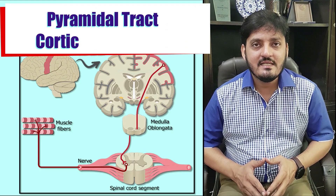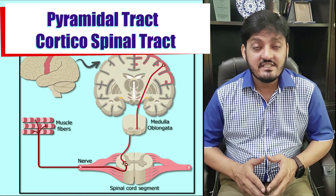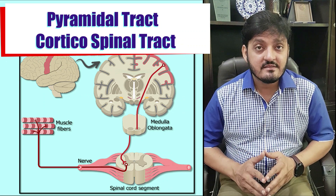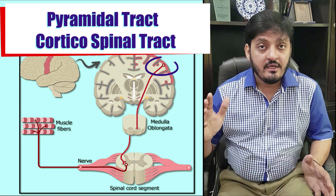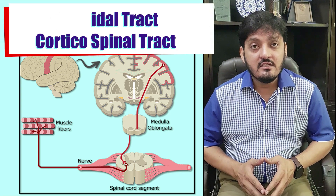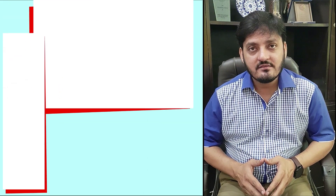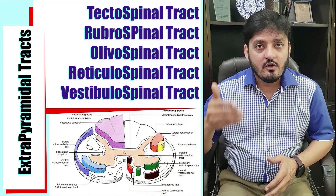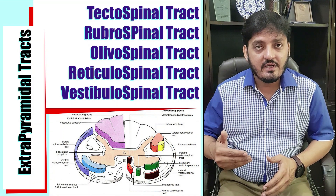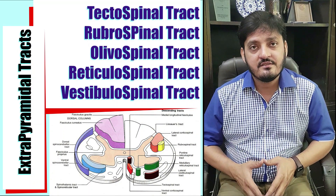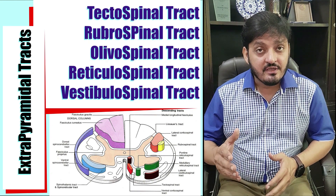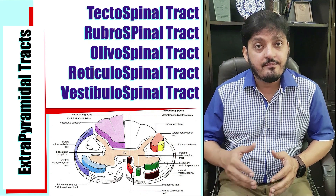Hello, dear students. Today's lecture is about the descending tracts of the spinal cord — the corticospinal tracts that consist of an upper motor neuron and a lower motor neuron. After this, I will talk about the extrapyramidal tracts: the tectospinal tract, the rubrospinal tract, the olivospinal tract, the reticulospinal tract, and the vestibulospinal tracts. I will explain their mechanism of action and anatomy step by step.